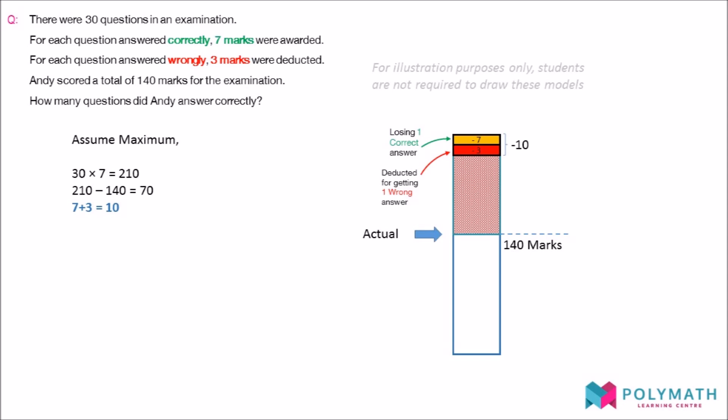When we replace a correct answer with a wrong answer, Andy loses 10 marks. Andy must have lost 70 marks to have scored 140 marks. By dividing 70 by 10, we get the number of times we must replace the correct answer with the wrong one.